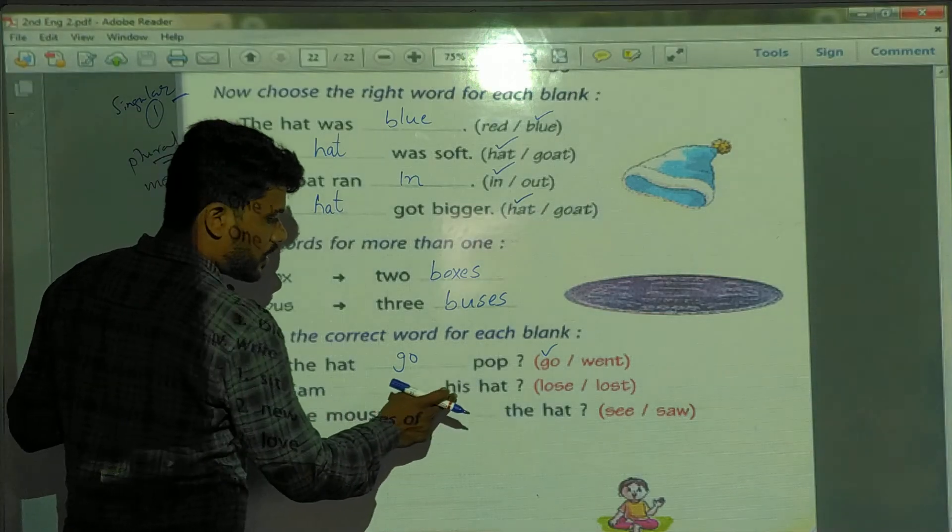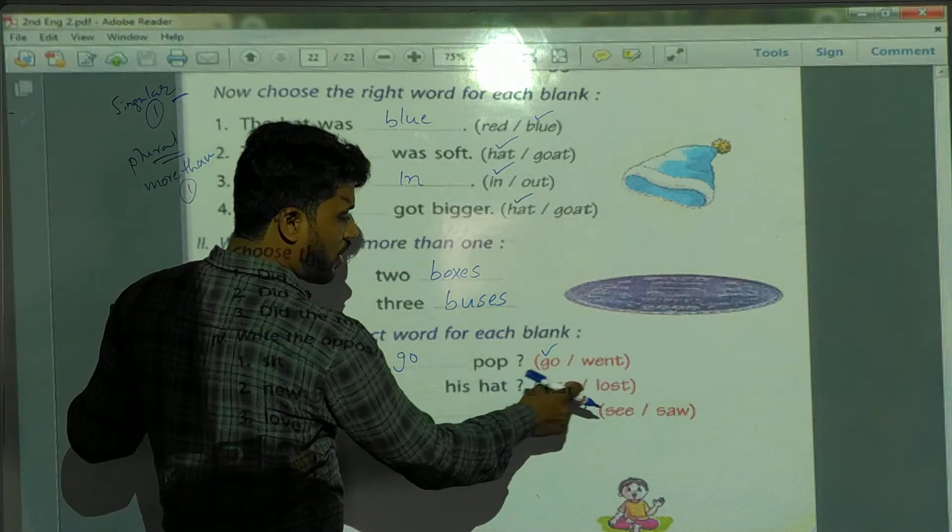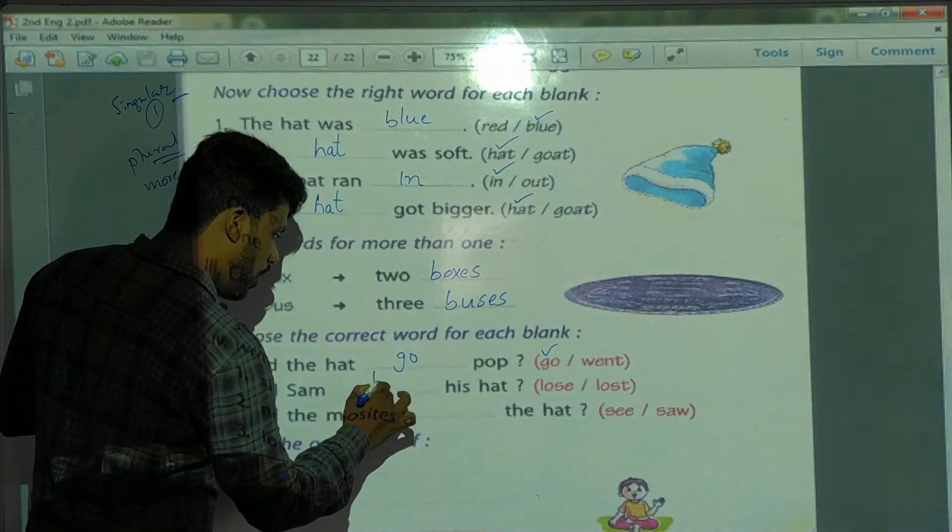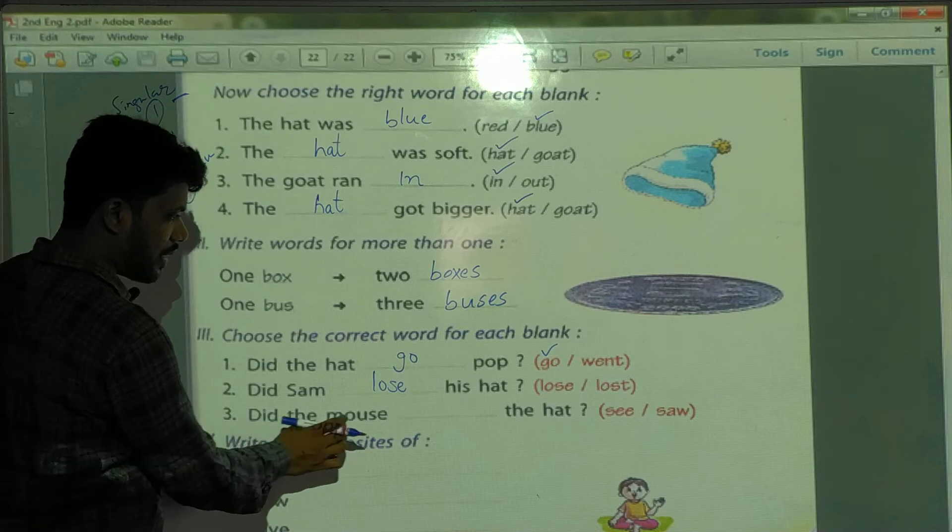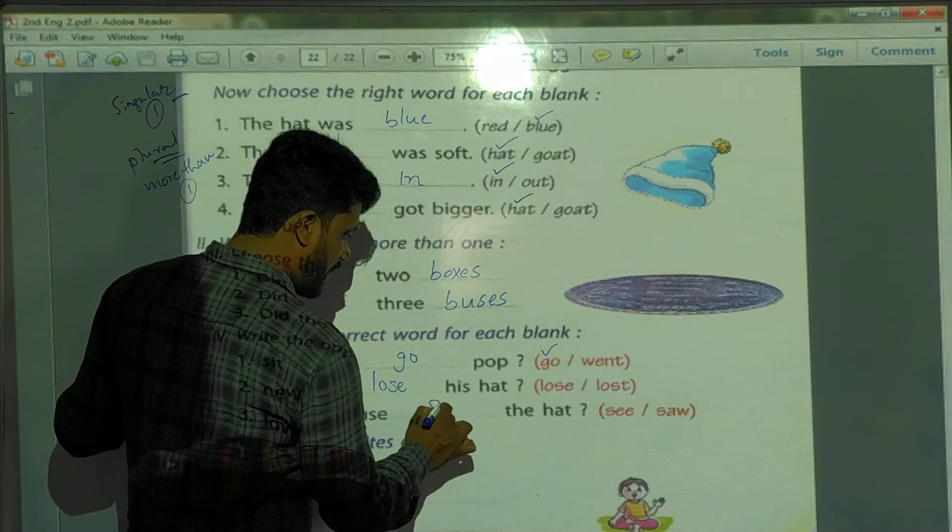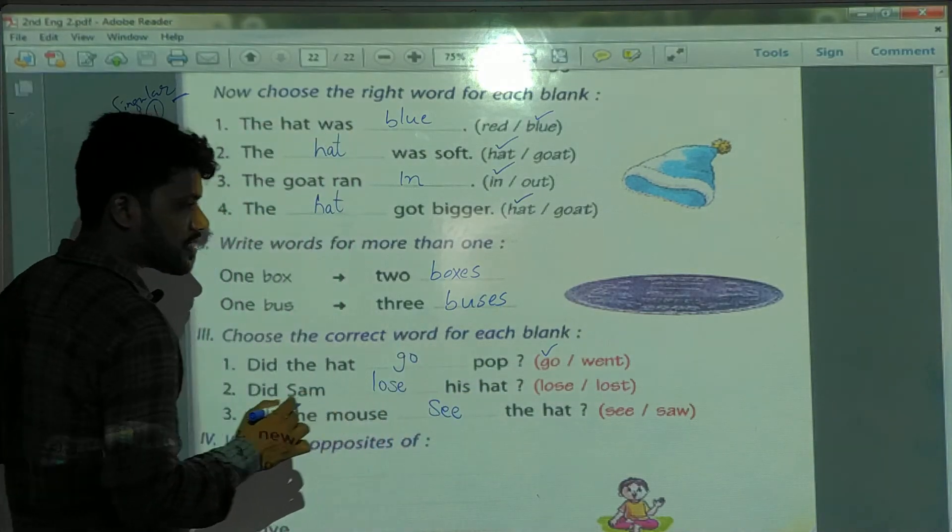Did Sam blank his hat? Lost or lost? Lost will come. Did Sam lose his hat? Did the mouse see the eye, not saw, see.